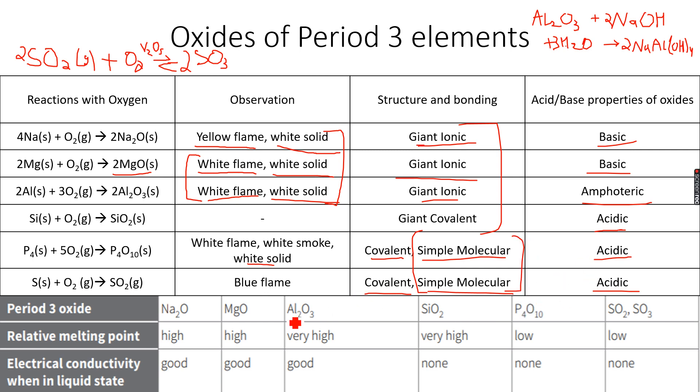Electrical conductivity: when in liquid state, sodium oxide is a good conductor because it's an ionic compound. All three are good conductors in the liquid state because they are ionic compounds. However, in the solid state, all three will not conduct electricity because the ions are not free to move.